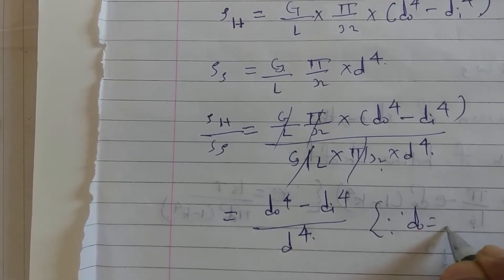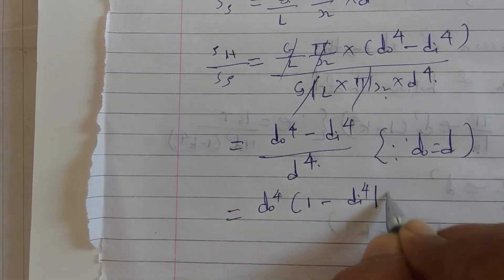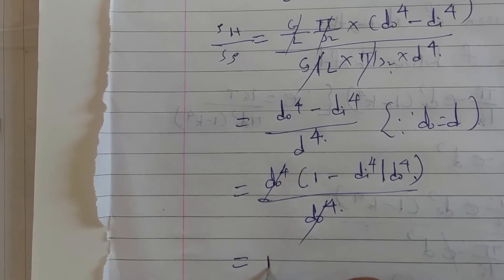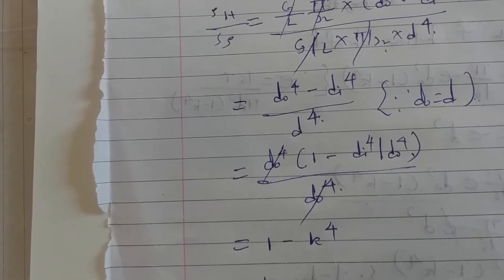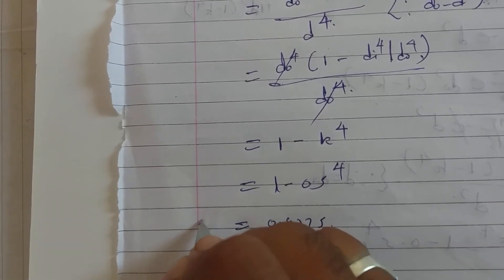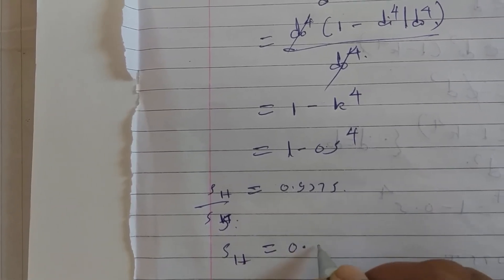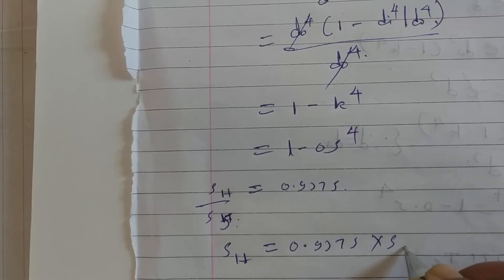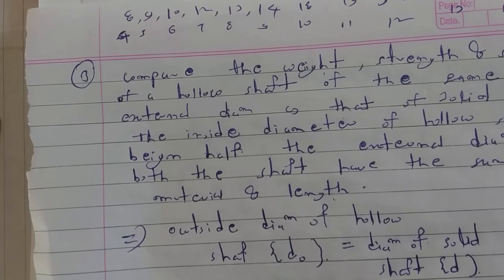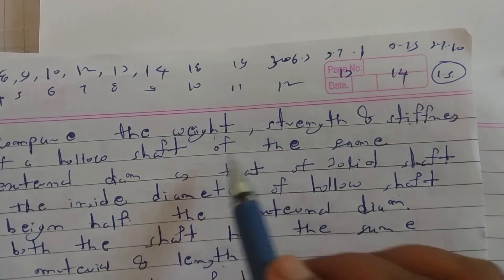Since D₀ = D, we take D₀⁴ common: 1 − (Di/D₀)⁴ = 1 − k⁴ = 1 − (0.5)⁴ = 0.9375. So the stiffness of the hollow shaft is 0.9375 times the stiffness of the solid shaft. If this question comes in the exam it is worth 6 marks — we compared weight, strength, and stiffness of hollow shaft versus solid shaft.